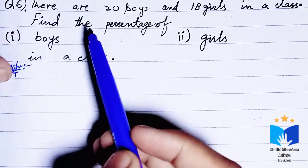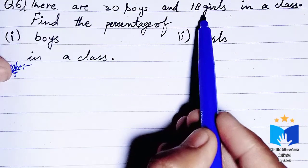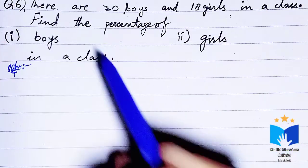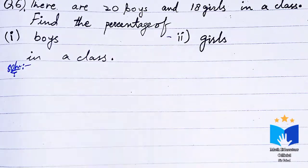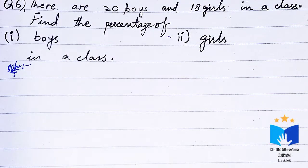The question we are solving is: There are 20 boys and 18 girls in a class. Find the percentage of boys in the class and find the percentage of girls in the class.